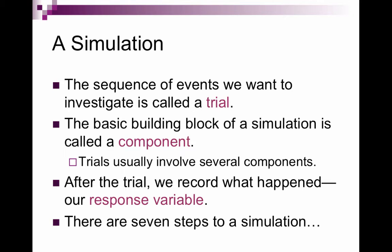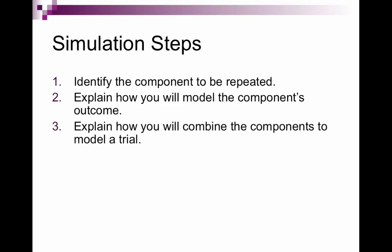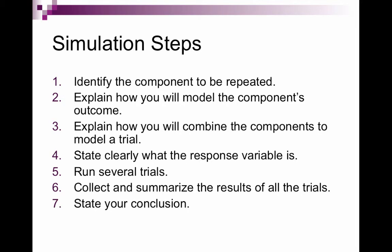There are seven steps to a simulation. The first step is to identify the component that is to be repeated. The second step is to explain how you will model the component's outcome. The third step is to explain how you will combine the components to model a trial. The fourth is to clearly state what the response variable is. Then you run several trials. Then you collect and summarize the results of all the trials. And finally, you state your conclusion.